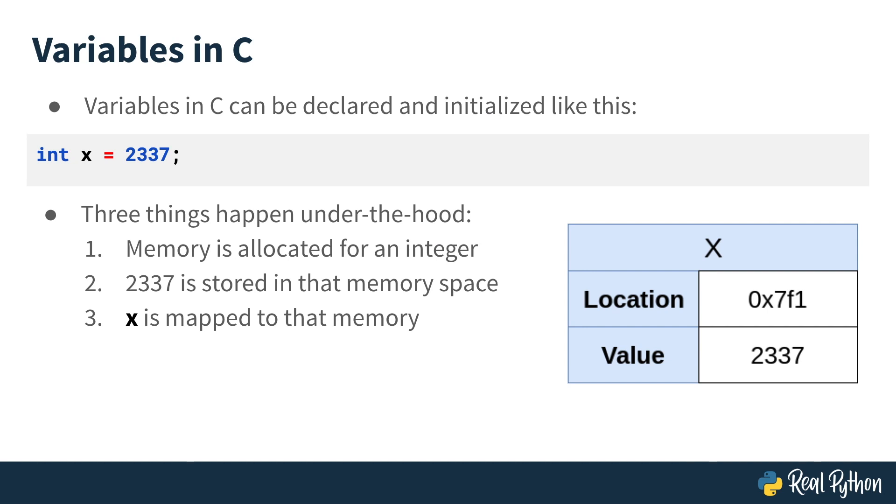C allocates enough memory for an integer, it assigns the value 2337 to that space in memory, and then it indicates that x points to that space in memory.